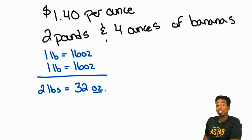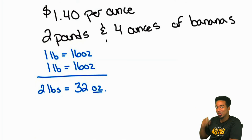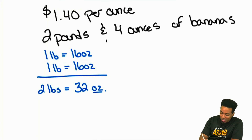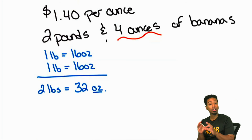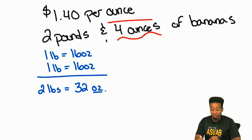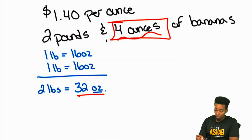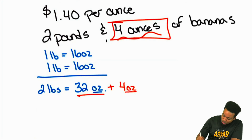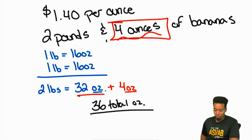Are we only multiplying by thirty-two? Don't get tricked — don't forget the four ounces that were there too. A lot of times people forget that extra four ounces and just multiply by thirty-two. No — we still have the extra four ounces, so we should be multiplying by thirty-six total ounces. Now we're ready to multiply.